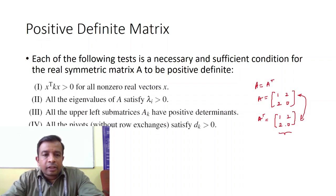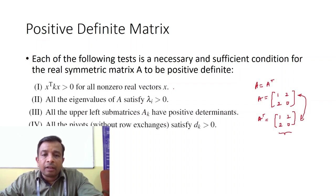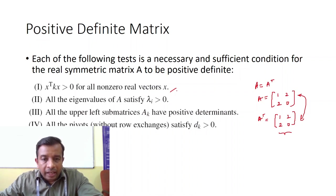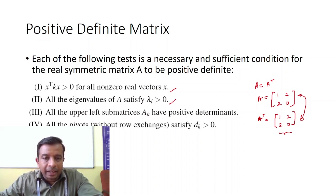If a real symmetric matrix A has to be positive definite, it must pass the following tests. First, x transpose K x, where K is our matrix A, should be greater than 0 for all non-zero real vectors x. Second, all eigenvalues of A should be positive — greater than 0.